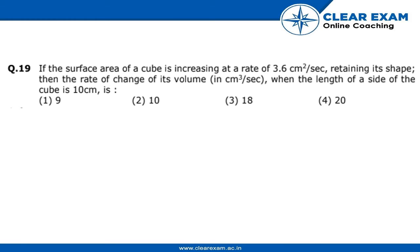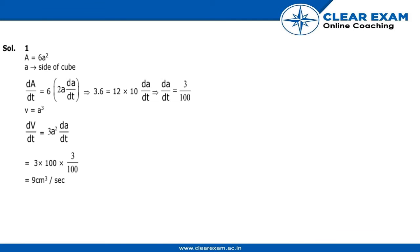If the surface area of a cube is increasing at a rate of 3.6 cm² per second, retaining its shape, then the rate of change of its volume in cm³ per second when the length of a side of the cube is 10 centimeters would be: 9, 10, 18, or 20? Let's find this answer.